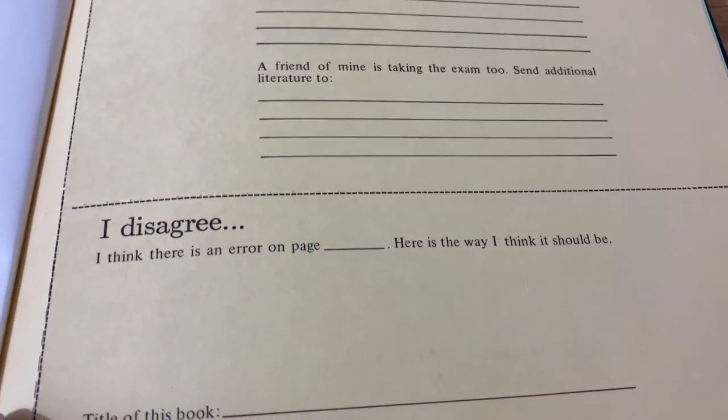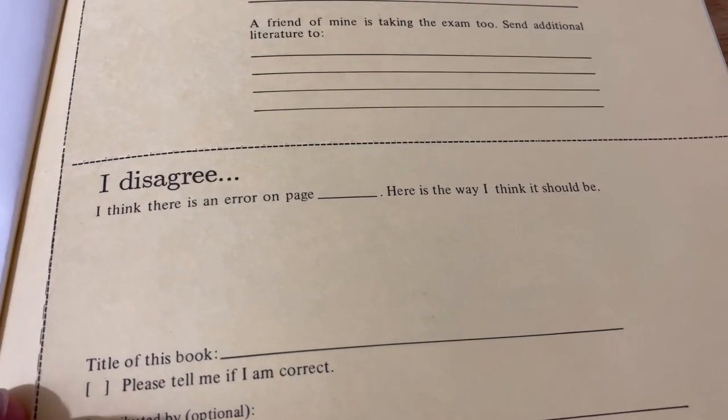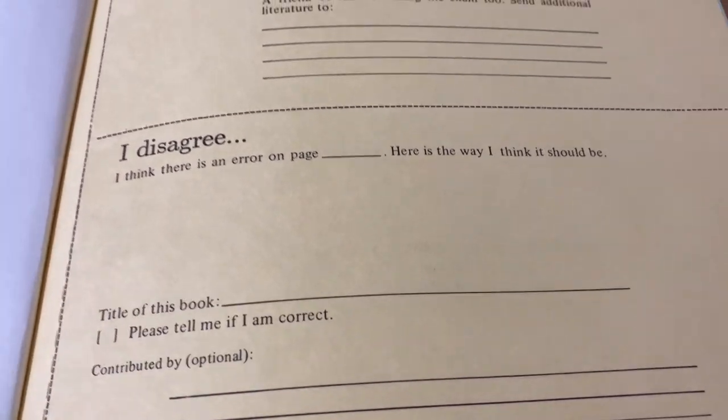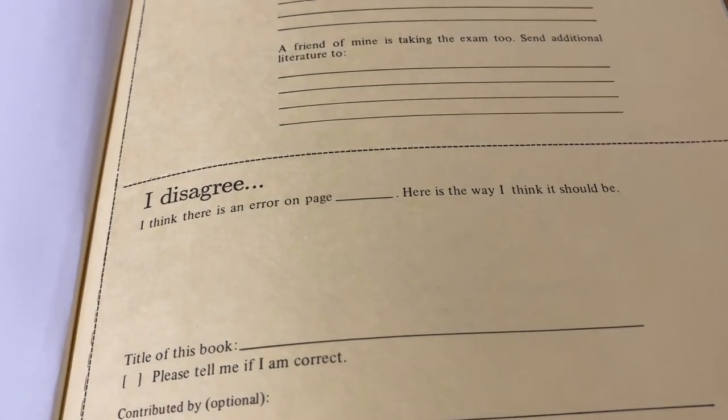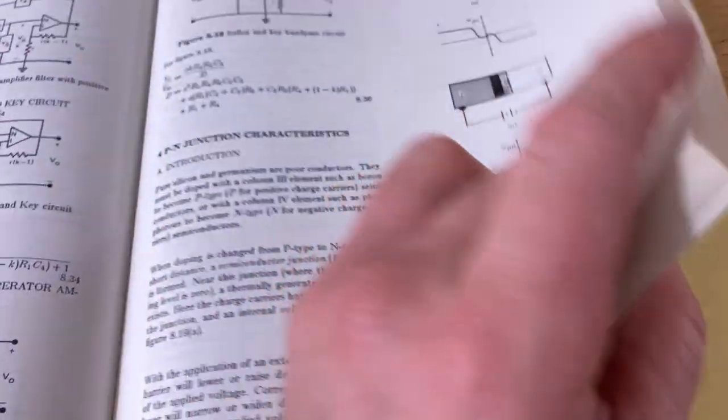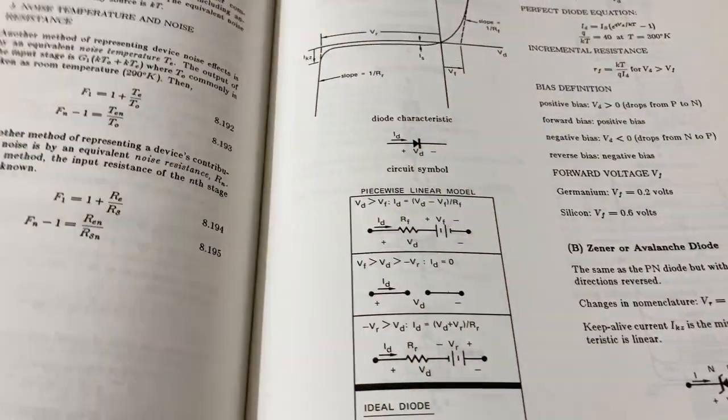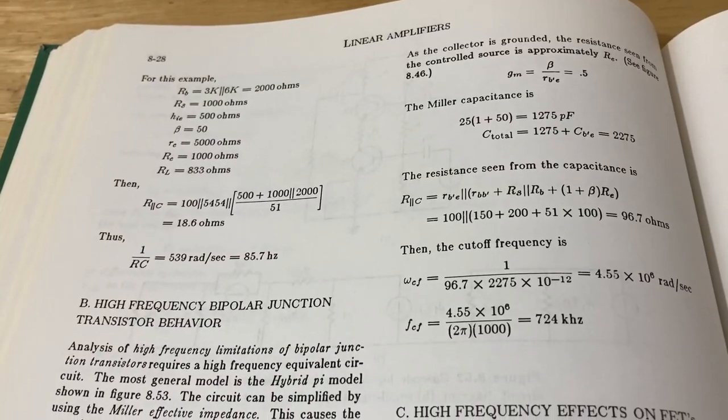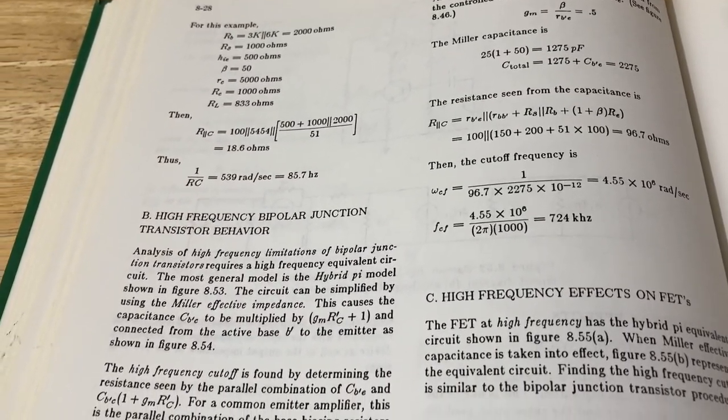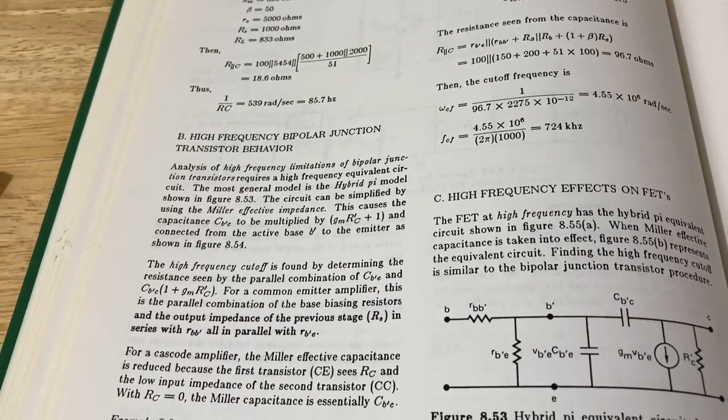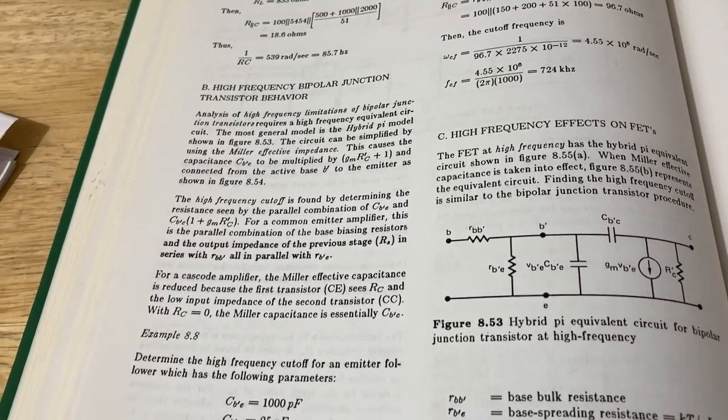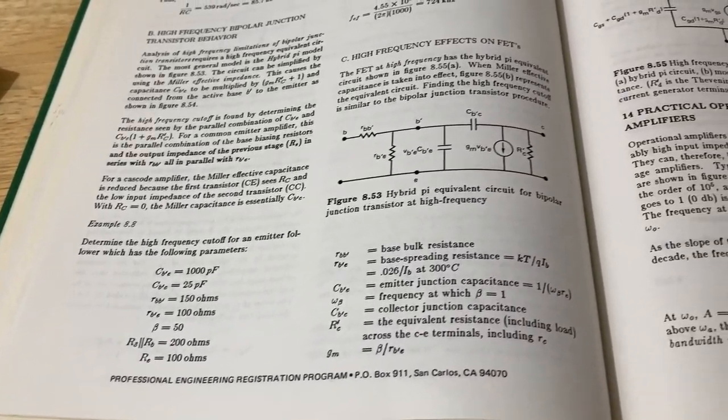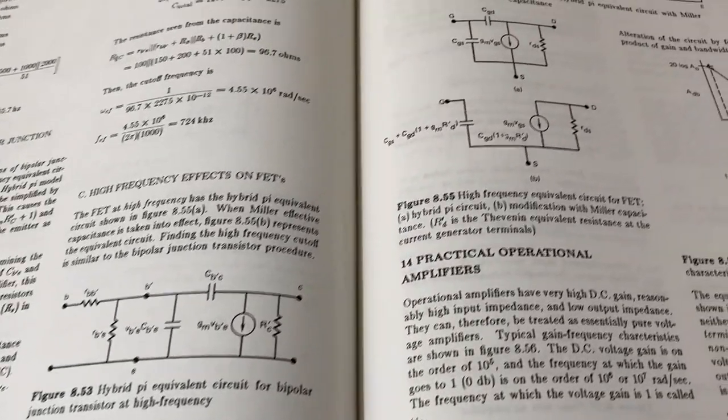And this one is, I disagree. I think there is an error on page. Here's the way I think it should be. I found an error already. I found that small error. It was off by one decimal place on a problem I was doing. And I thought, wow, not an engineering book. I really wonder how many classes you would have to take in college to cover all of the material in this book because I feel like there is just so much here. If someone knows, please leave a comment in the comment section.